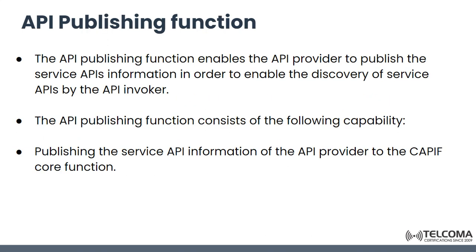Next is the API Publishing Function. This function enables the API provider to publish the service API information, which is to enable the discovery of service APIs by the invokers. Its capabilities include: it audits the service invocation logs received from the KPIF Core Function, and it publishes the service information of the API provider to the KPIF Core Function.